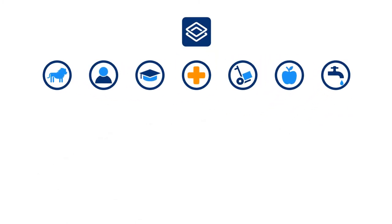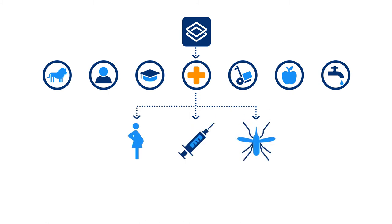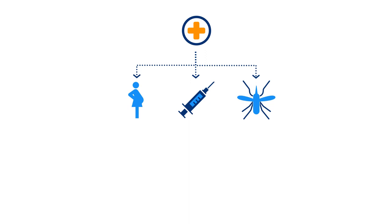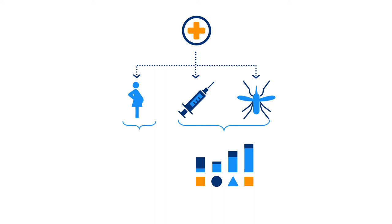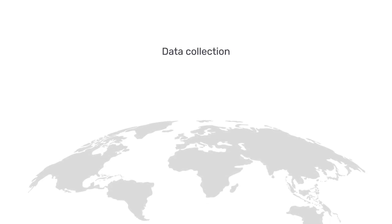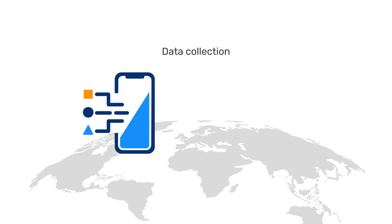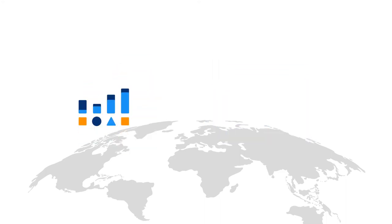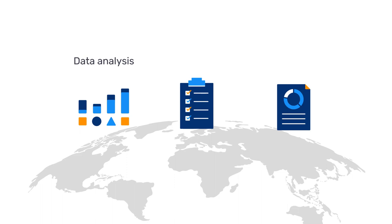For example, a health information system can include multiple health programs such as maternal health, immunization, and malaria control. Some programs can be managed through collection and analysis of aggregate data, while others require data down to the individual level. Different countries and contexts allow for different means of data collection, such as on a mobile device or a web browser. And specific information outputs are required for each context to facilitate tasks such as data analysis, patient follow-up, and program management and evaluation.